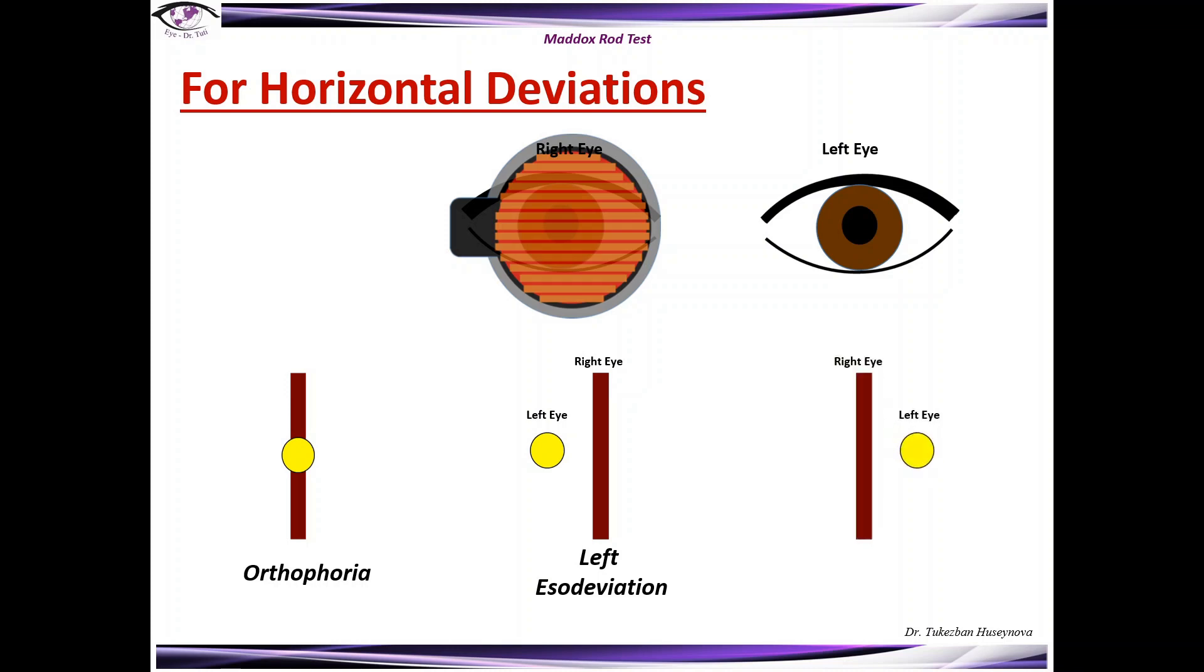In case if the patient sees the light on the left side of the red line, this is the left exodeviation.